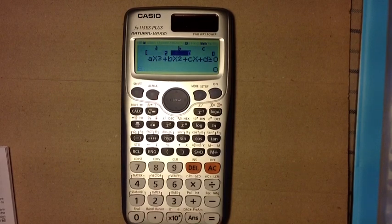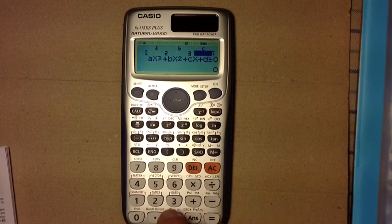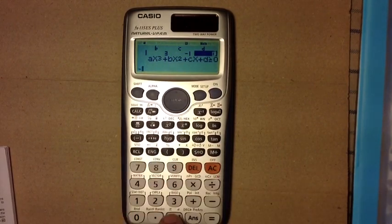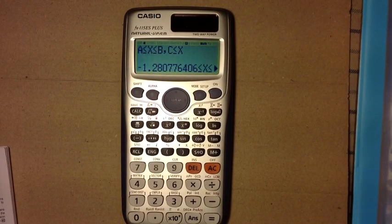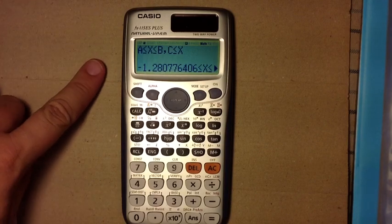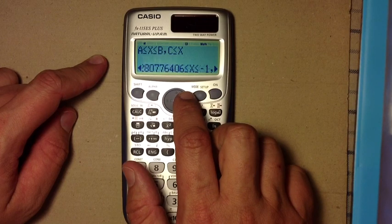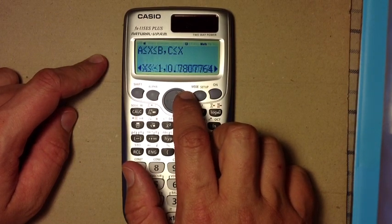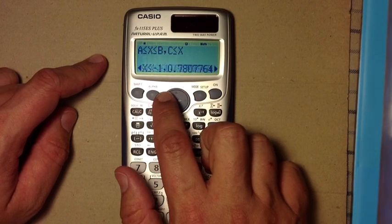And I enter my coefficients, let's say, two is A, and three is B, and negative one is C, and then negative two is D.